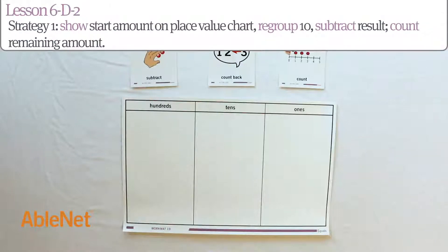For the first strategy, we're going to show the start amount on the place value chart, regroup 10, subtract the result, and count the remaining amount.